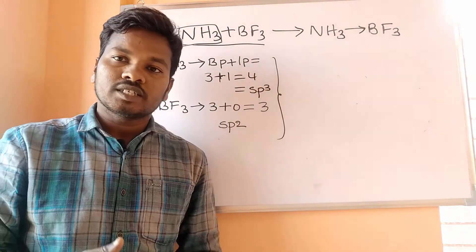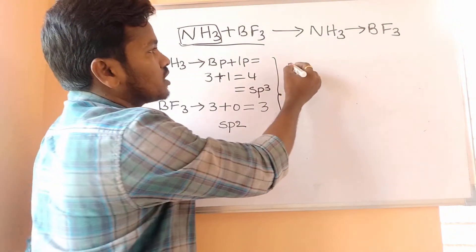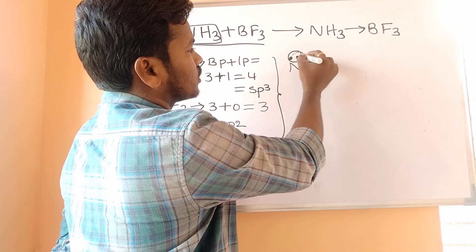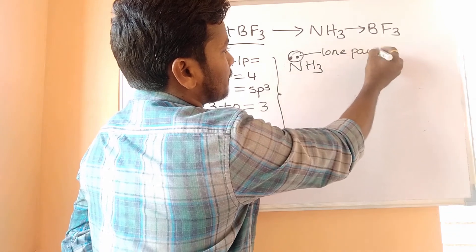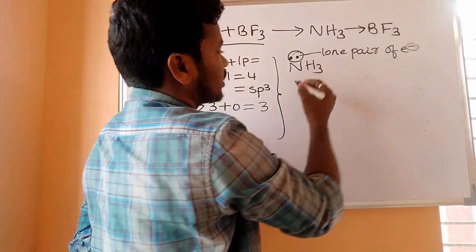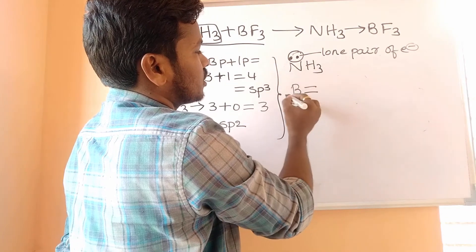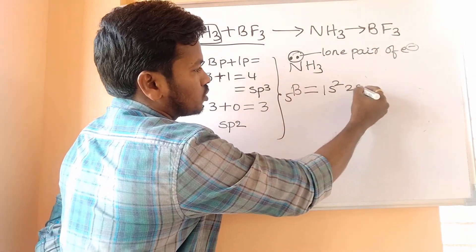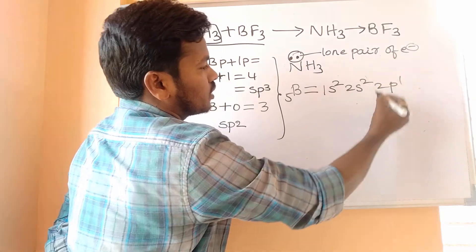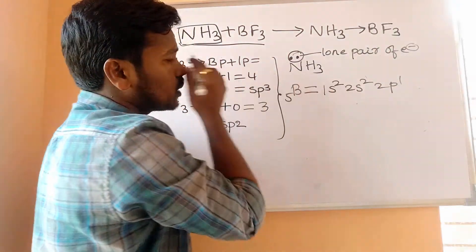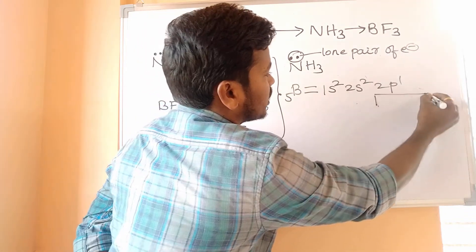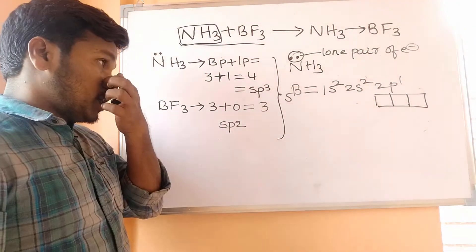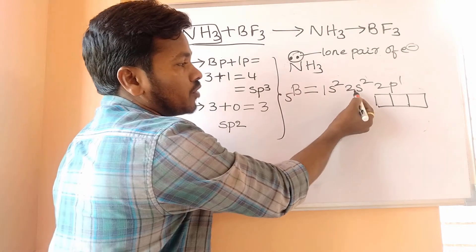After the reaction, we have to find out whether the hybridization changes or not. NH3 has one lone pair of electrons. For BF3, boron has atomic number 5, with electronic configuration 1s2 2s2 2p1. It forms sp2 hybridization in BF3.